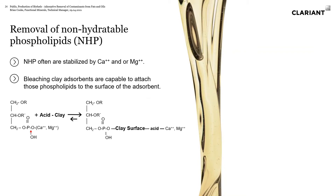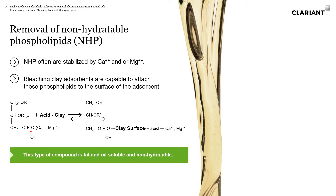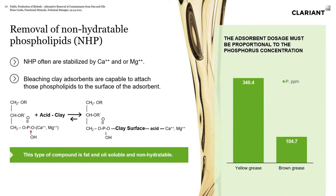Looking at the non-hydratable phospholipids, they're often stabilized with calcium or magnesium. In the process, the phospholipids interact with the acid clay, get bound to the clay surface, and are then filtered out, so they never reach the catalyst and damage it. The adsorbent dosage is going to be proportional to the phosphorus concentration — if you have something with 340 parts per million phosphorus, you're going to be using a lot more adsorbent than with something at 100 parts per million.